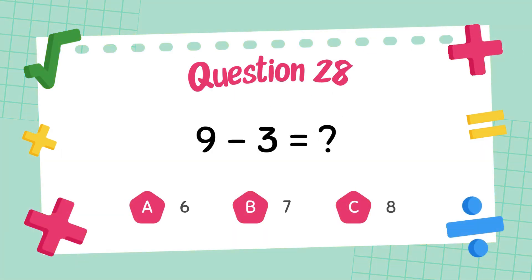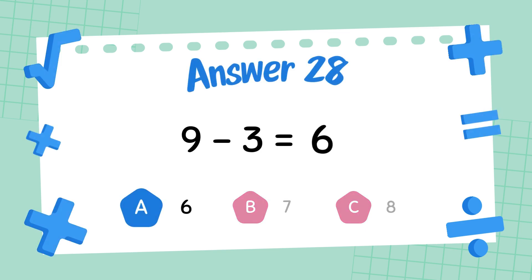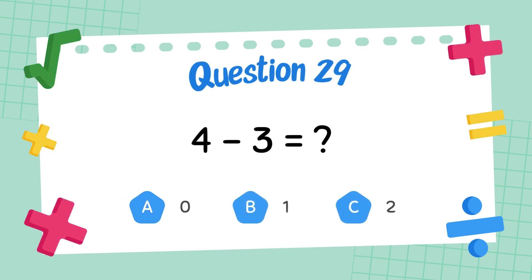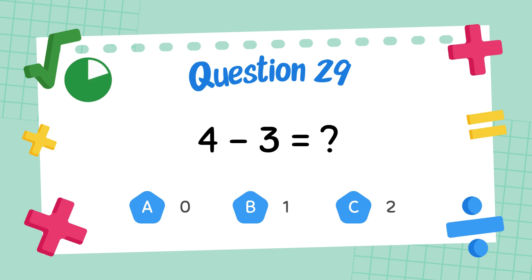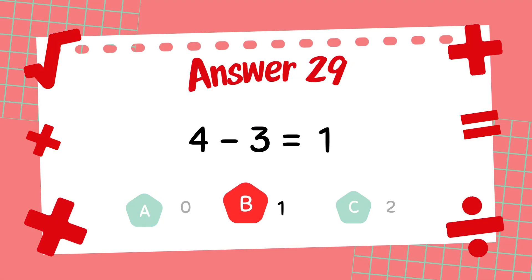What is 9 minus 3? The answer is 6. What is 4 minus 3? The answer is 1.